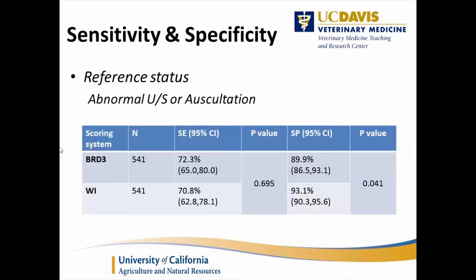Sensitivity and specificity — using the reference status of abnormal ultrasound or abnormal auscultation — was about 72% for BRD3 and 70% for the Wisconsin system, with no significant difference between them. For specificity, BRD3 was about 90% and Wisconsin was about 93%, and that was a statistically significant difference at P = 0.04.